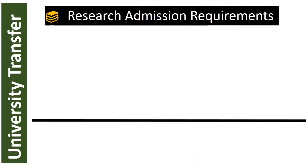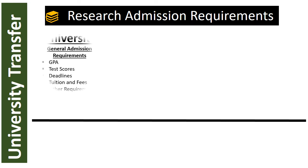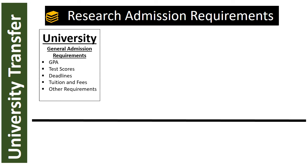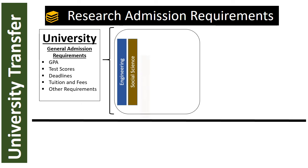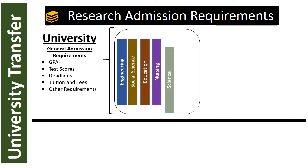Once you have decided on the CAC transfer pathway to pursue, you need to choose a bachelor's degree and a university to transfer into. A university has overall general admission requirements such as GPA, test scores, deadlines, tuitions, fees, and other requirements — and each university is different. Use the transfer guide spreadsheet to keep track of this information. Within the university, there are colleges or schools — for example, the college or school of business — which may have admission requirements in addition to the university's general education requirements.